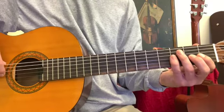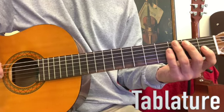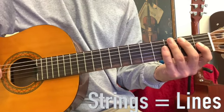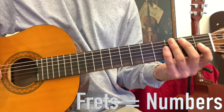In the past few videos, we've learned how to read a type of music called tablature. Tablature is a form of music where the strings are represented by lines and the frets of the instrument are represented by numbers.